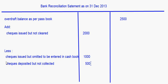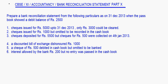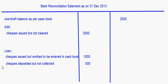A discounted bill of exchange dishonored Rs. 1000. When the discounted bill of exchange is dishonored, as per the passbook the overdraft balance goes up by Rs. 1000, whereas in the cashbook it has not been recorded, so the cashbook overdraft balance is less. This should also be deducted: Bill of exchange dishonored — Rs. 1000.